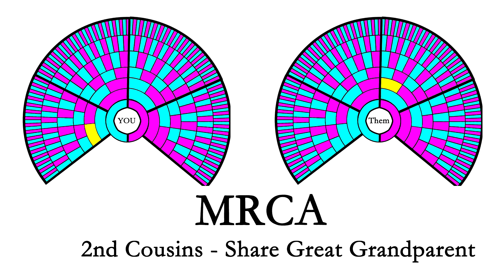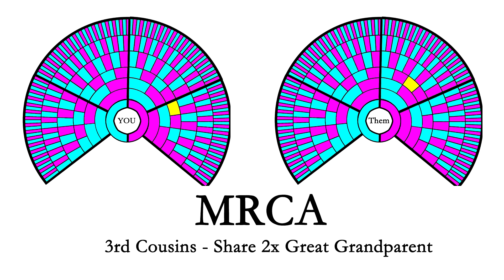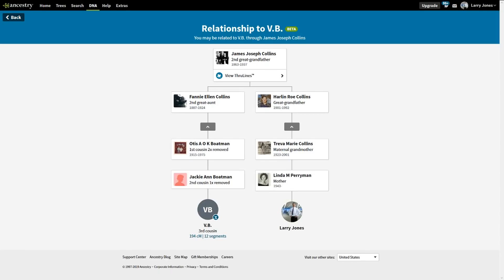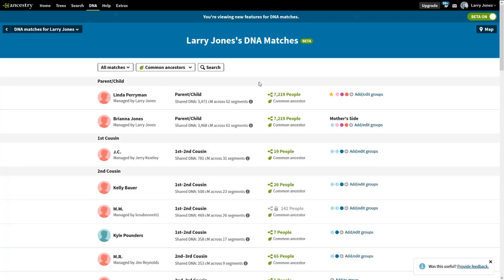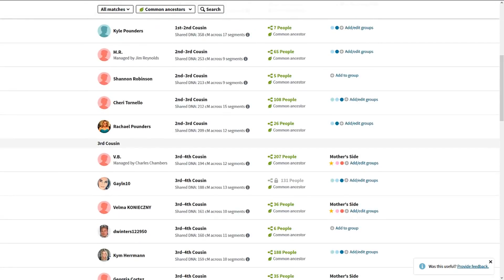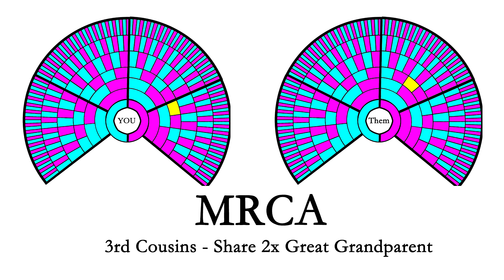Looking at a third cousin: my mother's mother's father's father's father and her mother's father's mother's father — we can see that represented here. Her mother's father's mother's father on the right, and my mother's mother's father's father on the left. That's how we match. Each person on our match list is going to connect to us in some way like this, though we don't always know where.